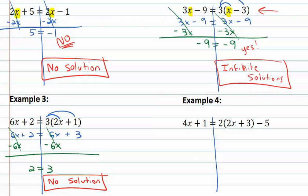Let's try another equation. This one's a little more involved, but again we can start simplifying by distributing on the left side. So we have 4x plus 1 equals 4x plus 6, still have the minus 5 at the end. Combining like terms, the 6 minus 5 is going to be 1, so we have 4x plus 1 equals 4x plus 1.